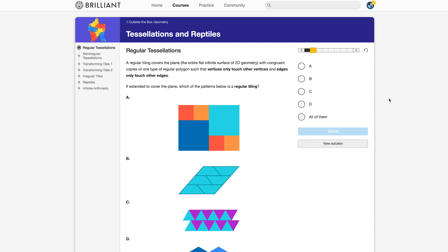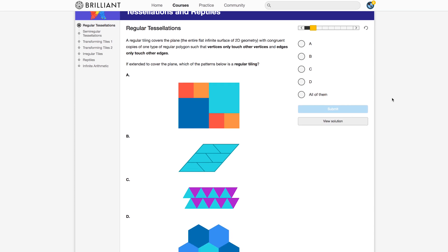If extended to cover the plane, which of the patterns below is a regular tiling? Ah, very good. Well, I think that I should have read all the information that came before this question. But I'm gonna go with D. Oh, maybe it's all of them. Incorrect. But look what it says underneath incorrect. It's okay. Getting stumped is part of learning. And I totally agree. That's what I love about Brilliant.org.